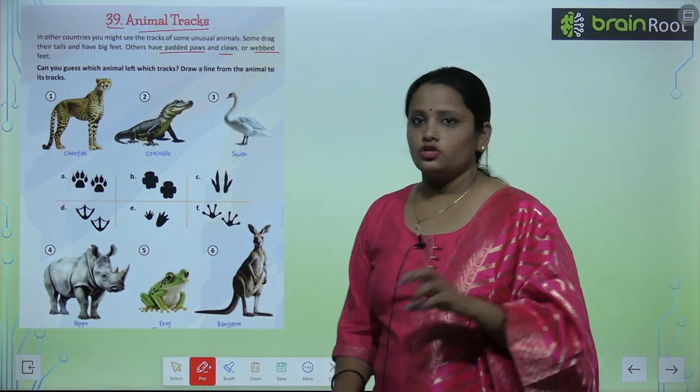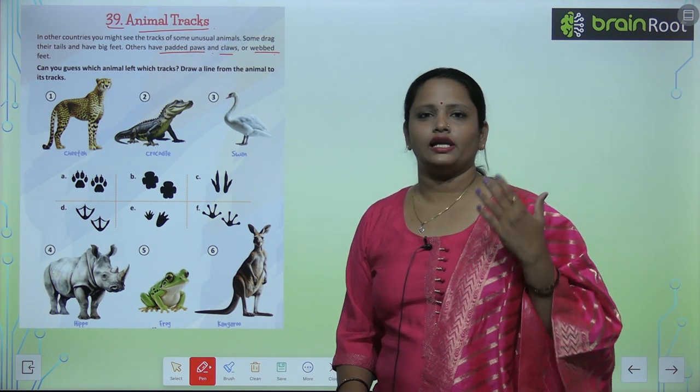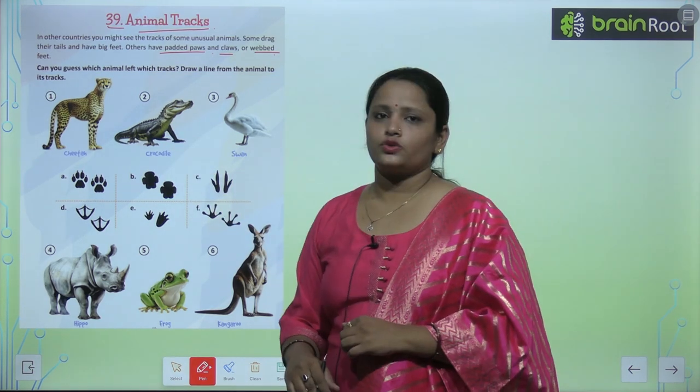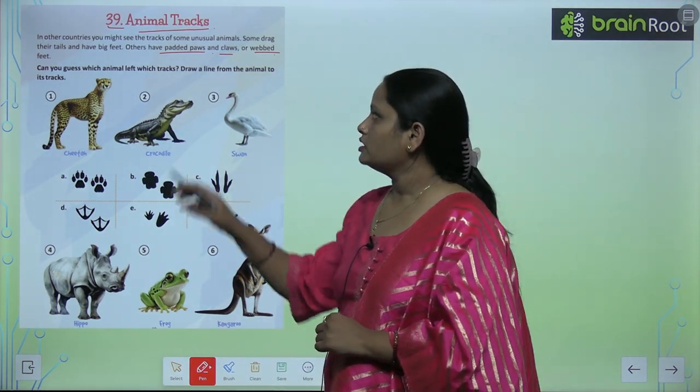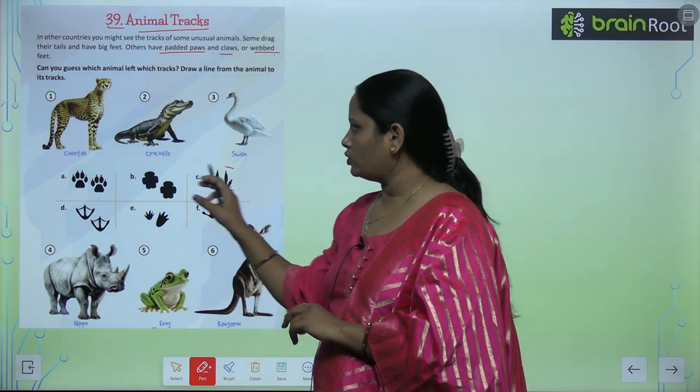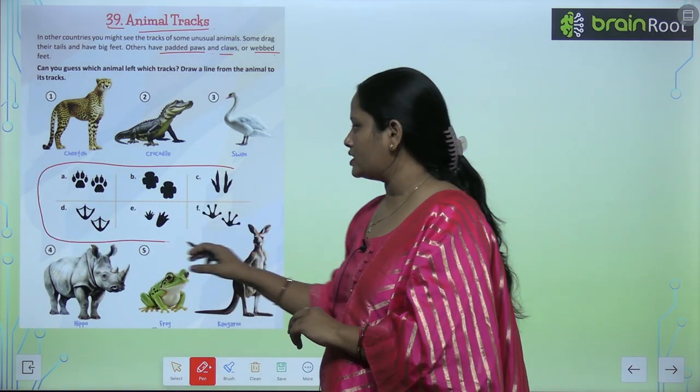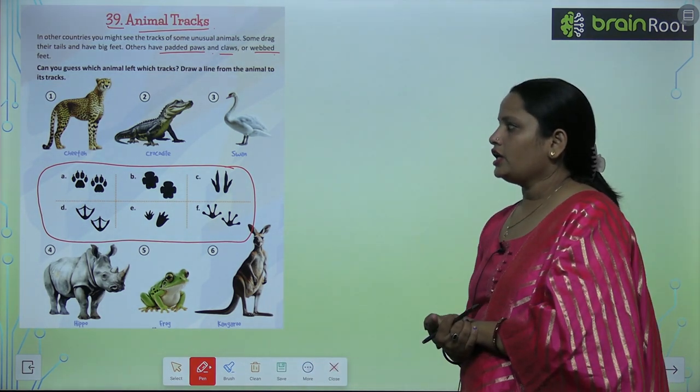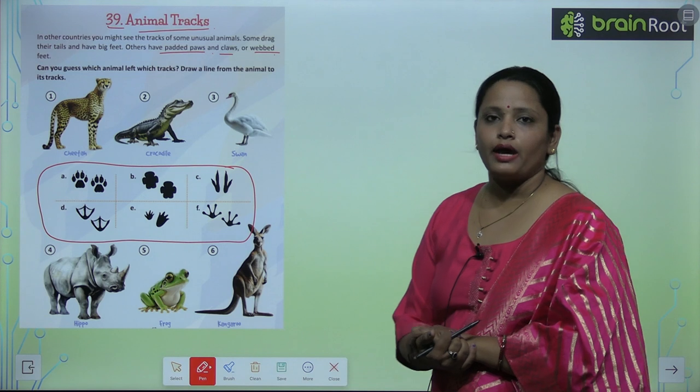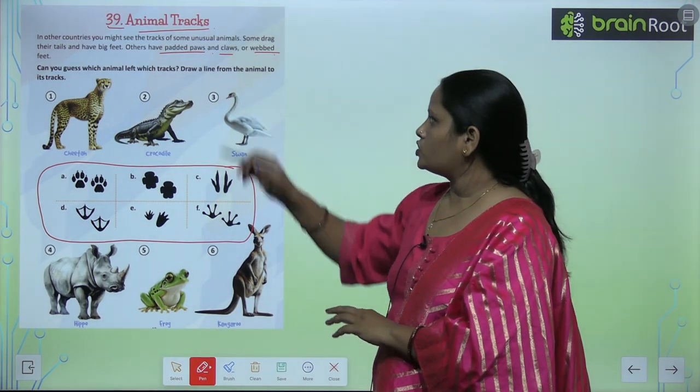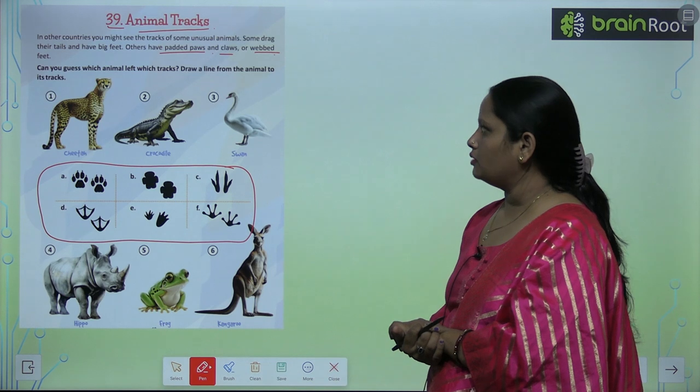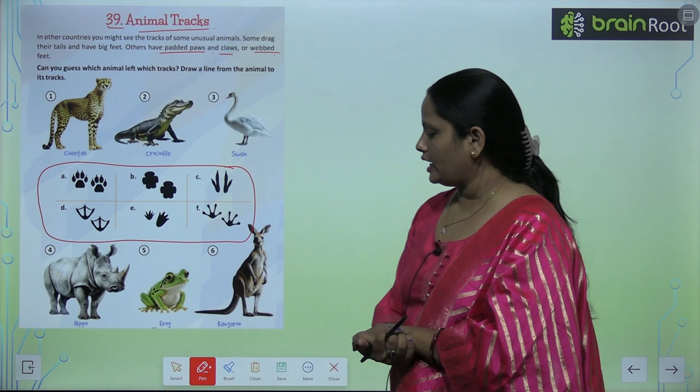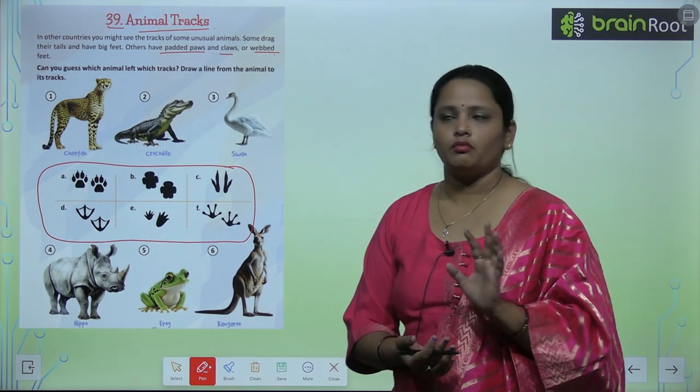So animals and feet are different. Different animals have different feet. Can you guess which animal left their track? So here you can see that there are some signs of animals. You have to identify which sign of the animal is. Draw a line from the animal to its track. We have to draw a line from the animal and then we have to mark it.